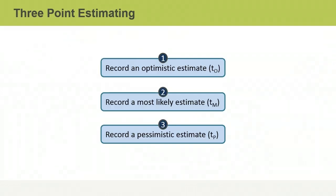Three-point estimating is one of the most accurate methods of estimating activity durations. To create three-point estimates, you begin by performing three steps. First, you record an optimistic estimate that reflects the estimated duration if conditions are very favorable. Next, you record a most likely estimate based on typical conditions and historical information. The third step is to record a pessimistic estimate based on how foreseeable negative conditions might delay an activity.